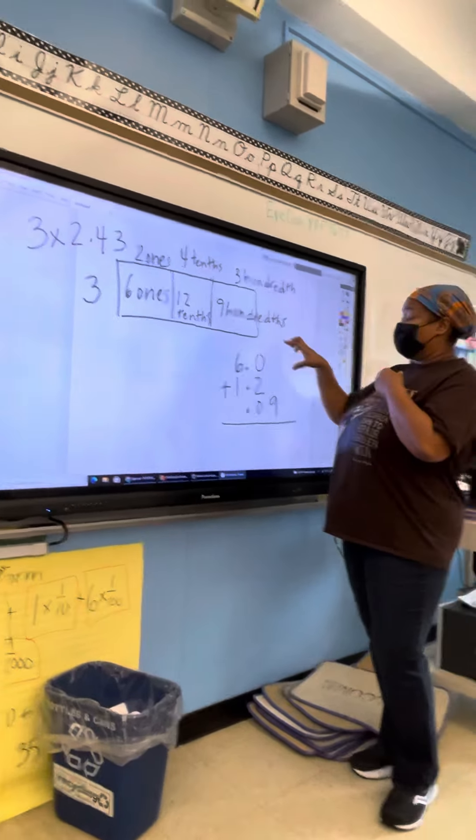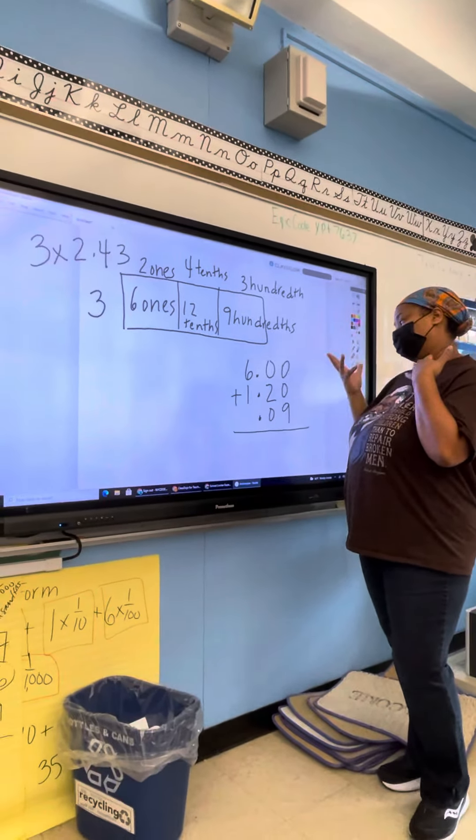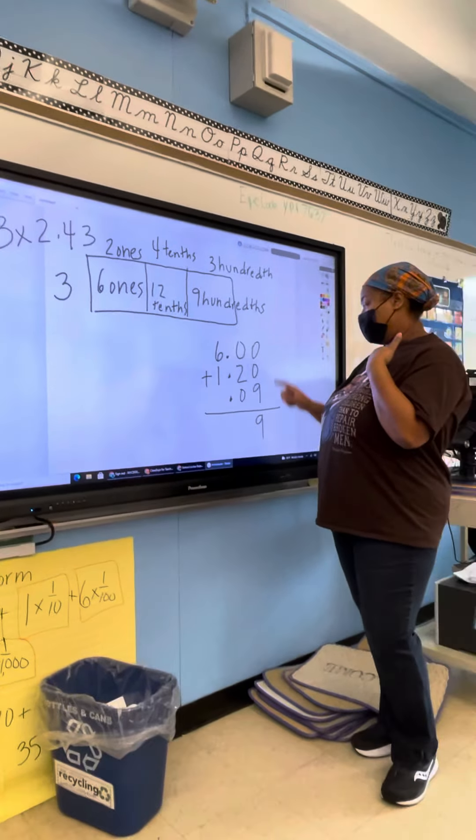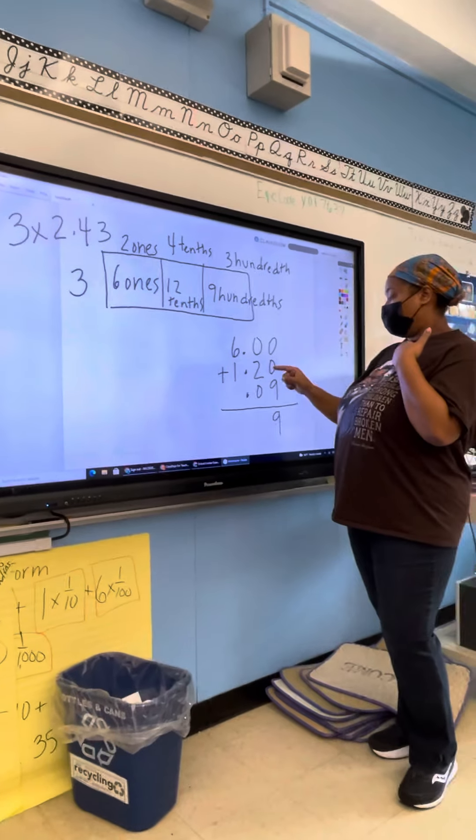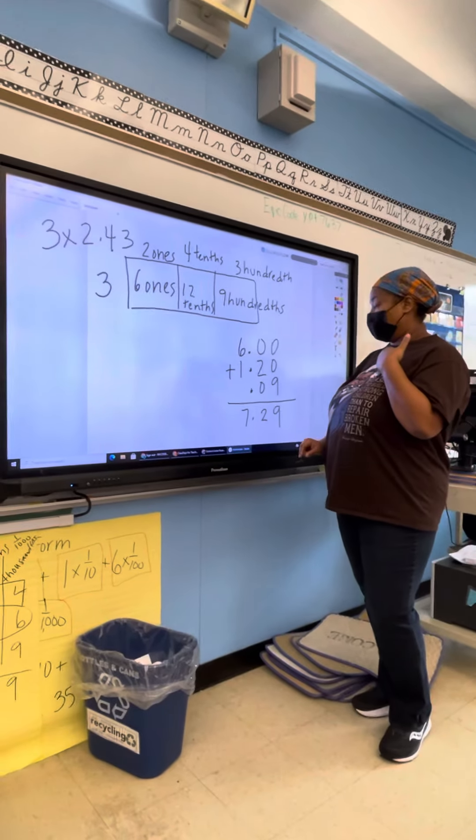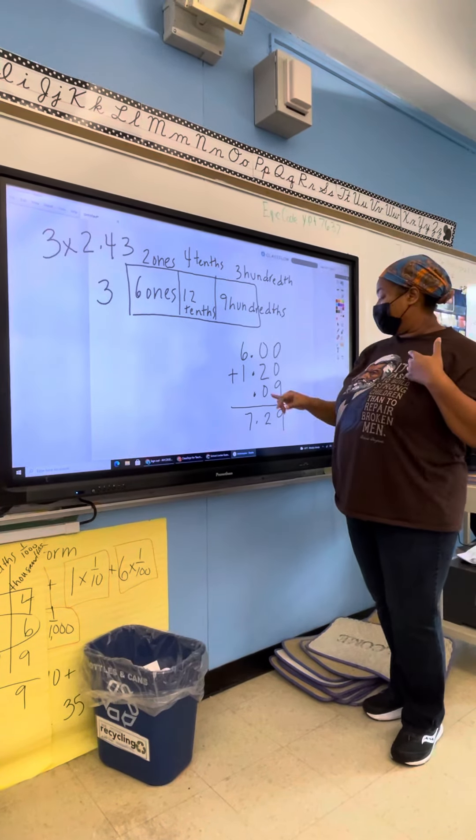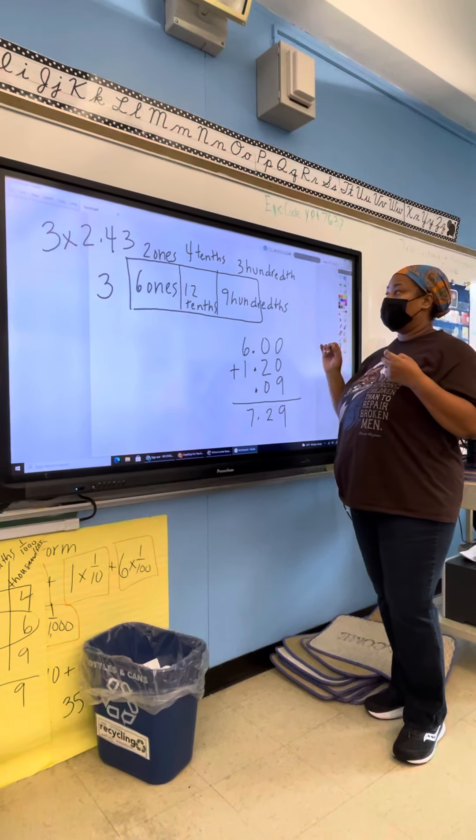Now I'm going to add all these up. There's no values here in the hundredths place. I can add a 0. So 9 plus 0 is 0, 2 plus 0, 6 plus 1 is 7. So my answer here for the original equation is 7 and 29 hundredths.